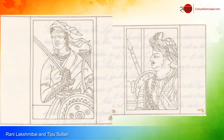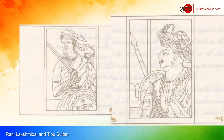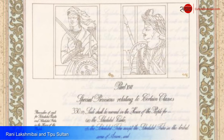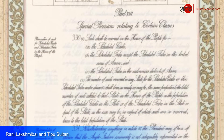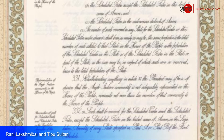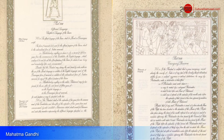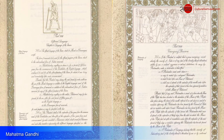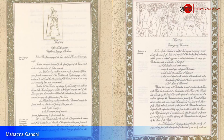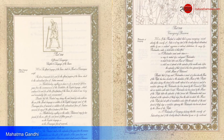The indomitable Rani Lakshmibai and the King of Mysore Tipu Sultan — two leaders who were instrumental in India's early freedom struggle — feature in Part 16. Two iconic illustrations of Mahatma Gandhi in Parts 17 and 18 of our Constitution are a humble tribute to his role in India's struggle for independence.